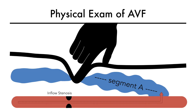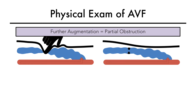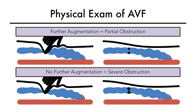Based on the amount of augmentation, the severity of inflow stenosis can be gauged. If your fistula is already hyperpulsatile due to a venous outflow stenosis, this test is still useful. If you're able to augment the already hyperpulsatile segment further, it suggests that inflow is good and the venous outflow obstruction is partial and perhaps not severe. If the hyperpulsatile segment does not augment further at all, it suggests severe, near-complete venous outflow obstruction.